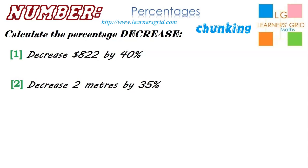Let's look at number one. It says decrease $822 by 40%. I guess what we have to find out is, what is 40% of $822? Chunking involves breaking down numbers so that they can be handled a little bit more easily, and what we're going to do is we're going to break down the 40%.